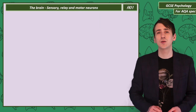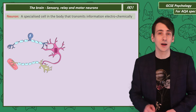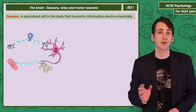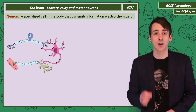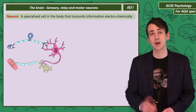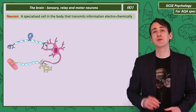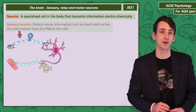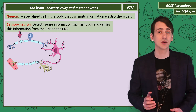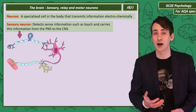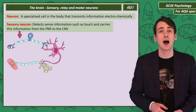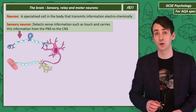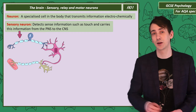It's likely you've seen an image like this before — it's a drawing of a set of neurons. A neuron is a specialised cell in the body that transmits information electrochemically. There are three different types of neurons in this picture. The blue one is a sensory neuron. This detects information, such as pressure or heat, and passes that information through the peripheral nervous system to the central nervous system.